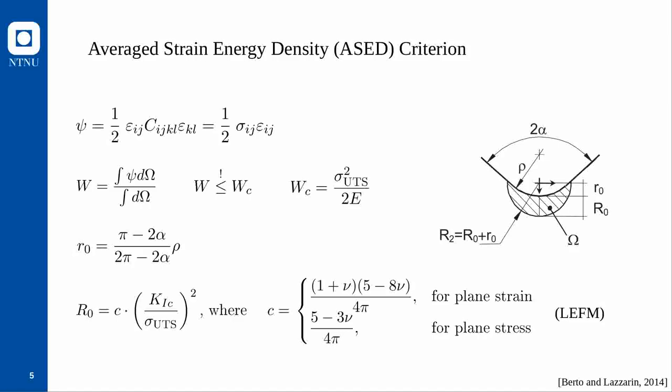The integration domain is shown in the figure on the right, taken from an extensive review by Berto and Lazzarin. It is shown for a blunt V-notch, but rho going to zero gives a sharp V-notch, and alpha going to zero gives a U-notch or crack — all are included. The ASED control volume has two length scales: small r0, the distance from the center of the control volume to the notch root containing purely geometric information; and capital R0, the distance from the notch root to the outer end of the control volume, which is a material property obtainable from tensile strength and fracture toughness via a formula based on linear elastic fracture mechanics.